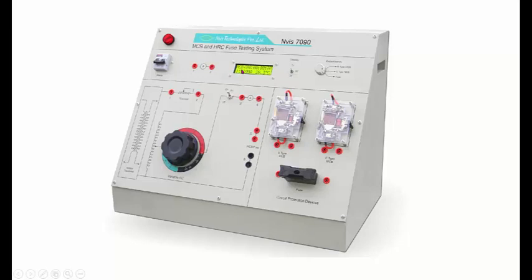For example, if you see the display, you see MCB C since this knob is connected at C terminal. If you select the B type MCB, then you will simply see MCB B. If you select fuse using this knob, then you will be seeing HRC here.